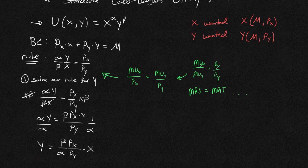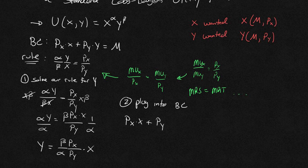Our next step, step number two, is going to be plug that into the budget constraint. Alright, px times x plus py times y, and we just solved for y. We have beta px over alpha py times x equals m.